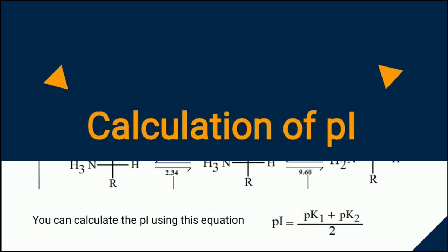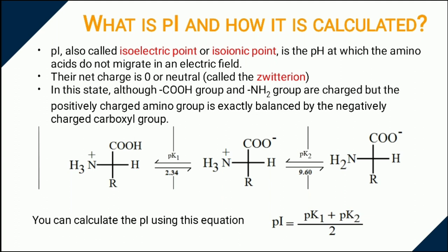First, PI and related problems. PI or isoelectric point is the pH at which the amino acids do not migrate in an electric field. Although they are charged but net charge is zero. In this state, that is called zwitterion.